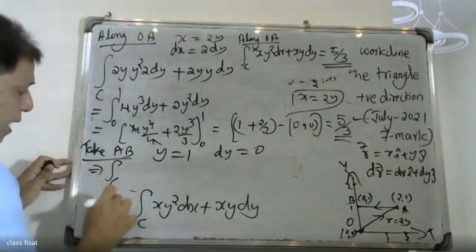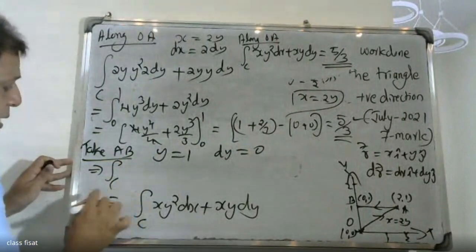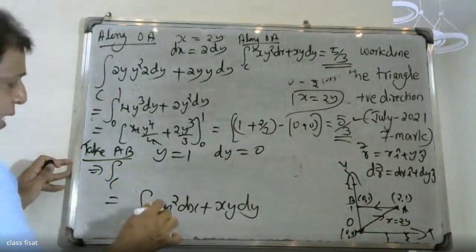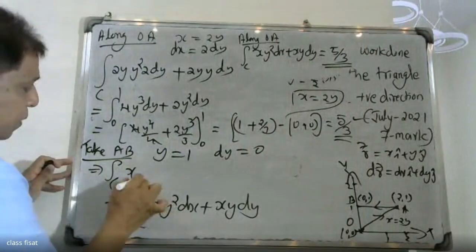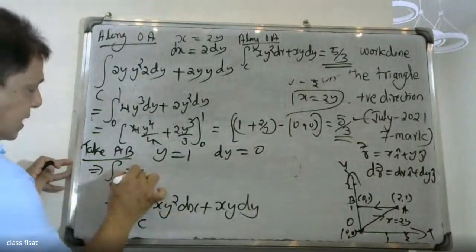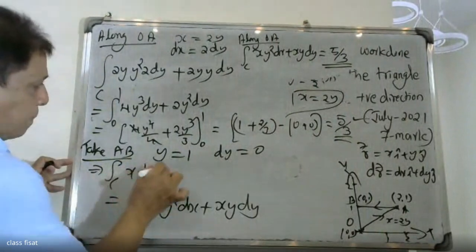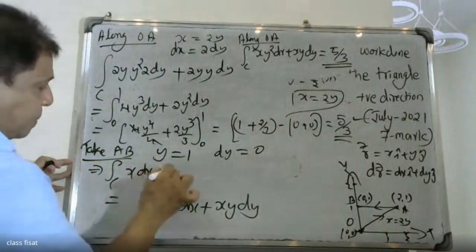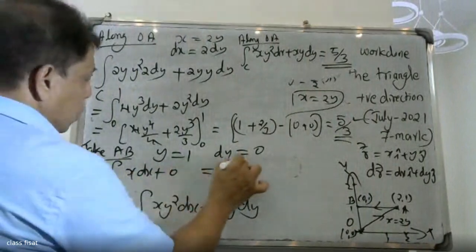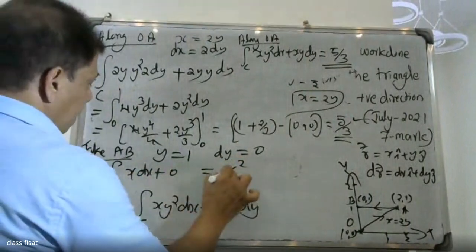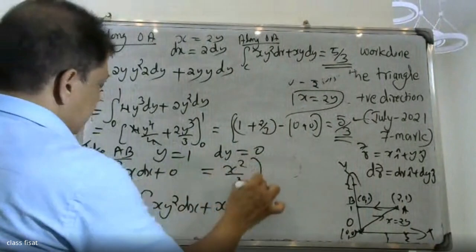The integral along path C: with y equal to 1, we get the integral of x times 1 dx, which gives x squared by 2.